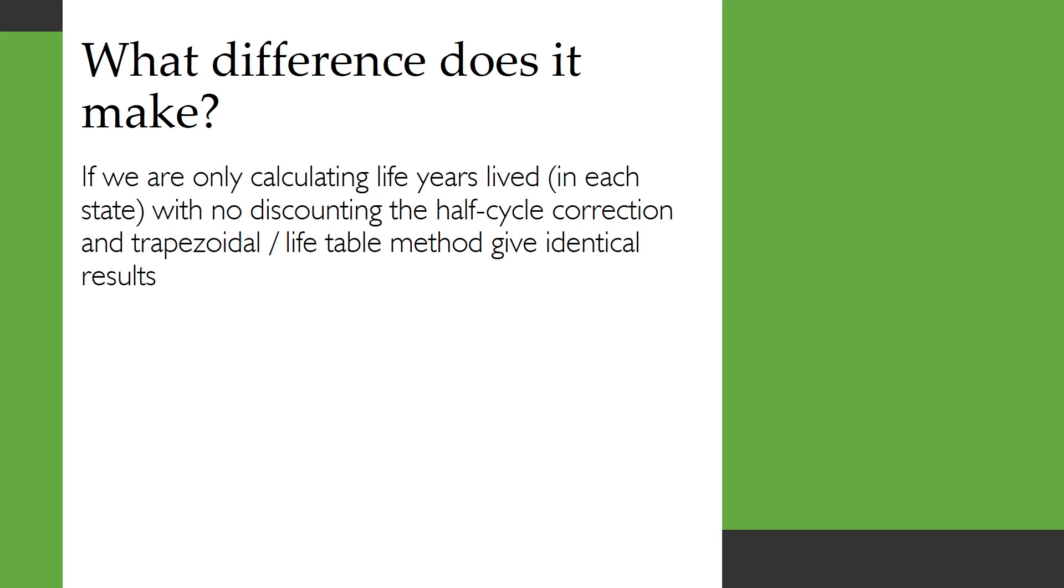Now what difference does it make whether we use that half cycle correction or some other method? Well if we're only calculating life years lived and there's no discounting then the half cycle correction and the trapezoidal method will give identical results.